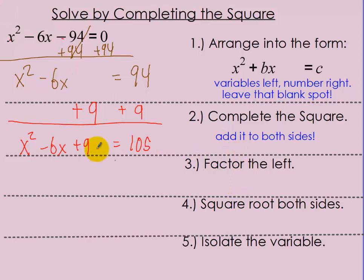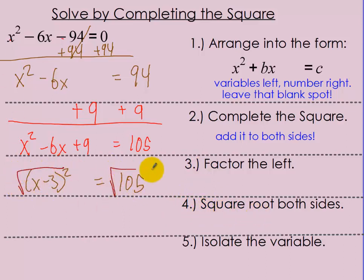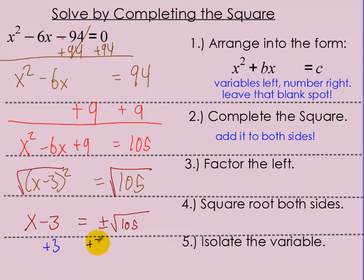Next step is to factor the left side — this is a perfect square trinomial, so it factors to x minus 3 squared equals 103. It's always just x minus half of b squared. Then square root both sides: when you square root something squared you're left with the base, so x minus 3 equals plus or minus square root of 103. Finally, add 3 to both sides to isolate x, giving x equals 3 plus or minus square root of 103.